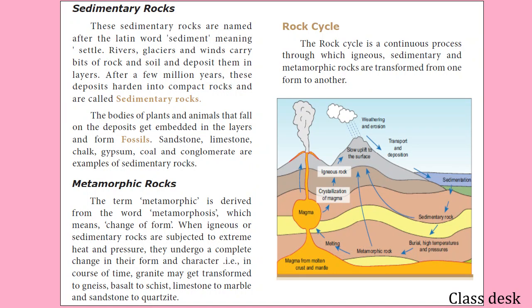Now we have sedimentary rock. Sediment is deposited and settled by agents such as rivers, glaciers, and wind. Over time, sediments accumulate under high pressure and form sedimentary rock. Sedimentary rocks are most commonly found in ocean floors and water bodies. Examples include sandstone, limestone, chalk, gypsum, coal, and conglomerate.